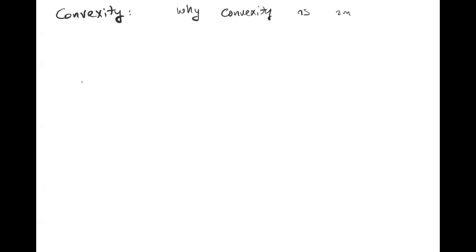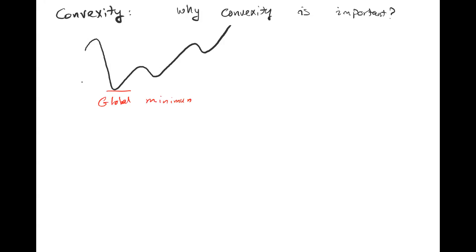The first question we want to ask is why convexity is important. Let's say your function in the one-dimensional case looks like this. As this figure shows, this function has a global minimum. It also has some local minimums. At some point your function is convex, where the point that happens to have a derivative of zero is a minimum. And there are some points where your function is concave, and at those points you have a local maximum.